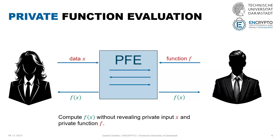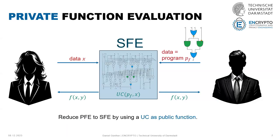The good news is we can reduce private function evaluation to secure function evaluation by using a universal circuit. Because the universal circuit is a general circuit that can evaluate any function, and the structure of the universal circuit does not reveal any information about the function — only the programming bits p_f. So p_f can be hidden through secure function evaluation, and we have a solution by using universal circuits.